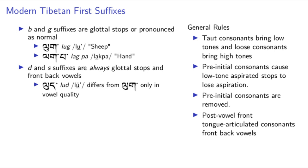Note that this causes an interesting distinction. Remember that the ga suffix also turned into a glottal stop in many cases. So for example, the word lu meaning 'sheep' and the word lu meaning 'manure' — the coda is a glottal stop in both cases, but they are actually pronounced differently in that the back vowel of the latter word was fronted. So what once was a distinction in ending consonant between two words has evolved into a distinction in vowel quality. Isn't that fun?